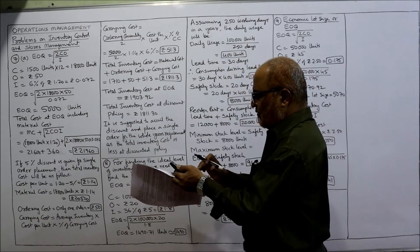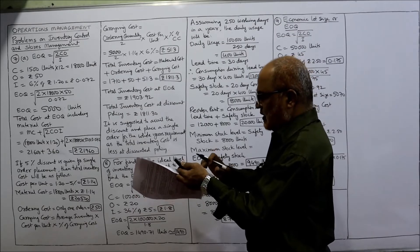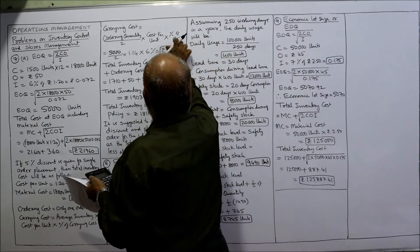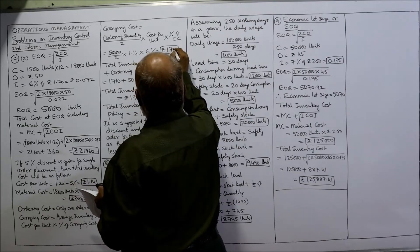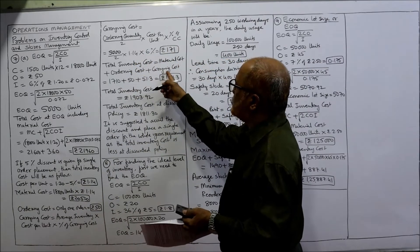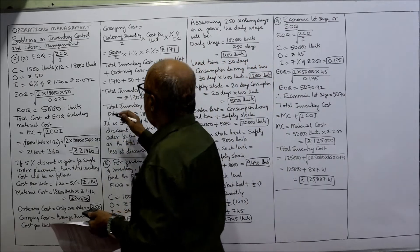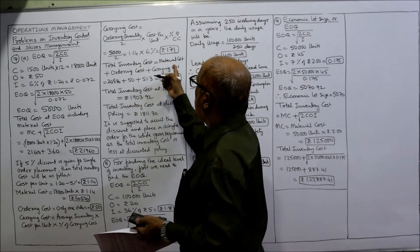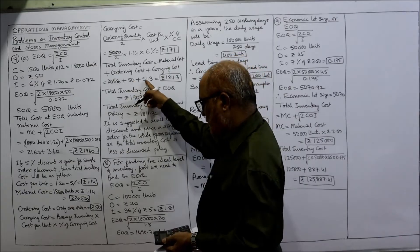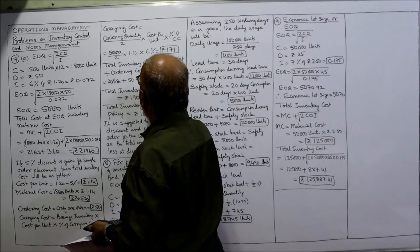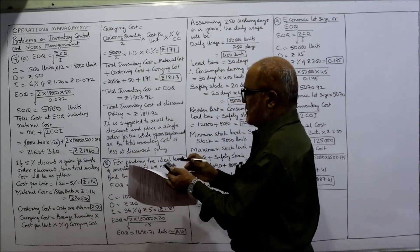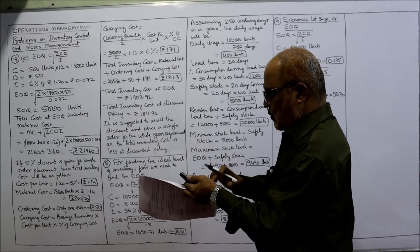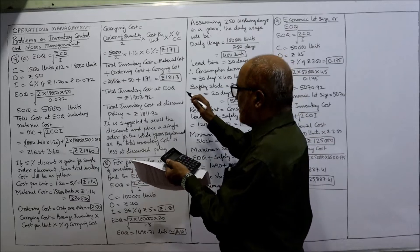Calculating: 5000 divided by 2 into 1.14 into 6% comes to 171. Total inventory cost equals material cost 20,520 plus ordering cost 50 rupees plus carrying cost 171, which comes to 20,741.